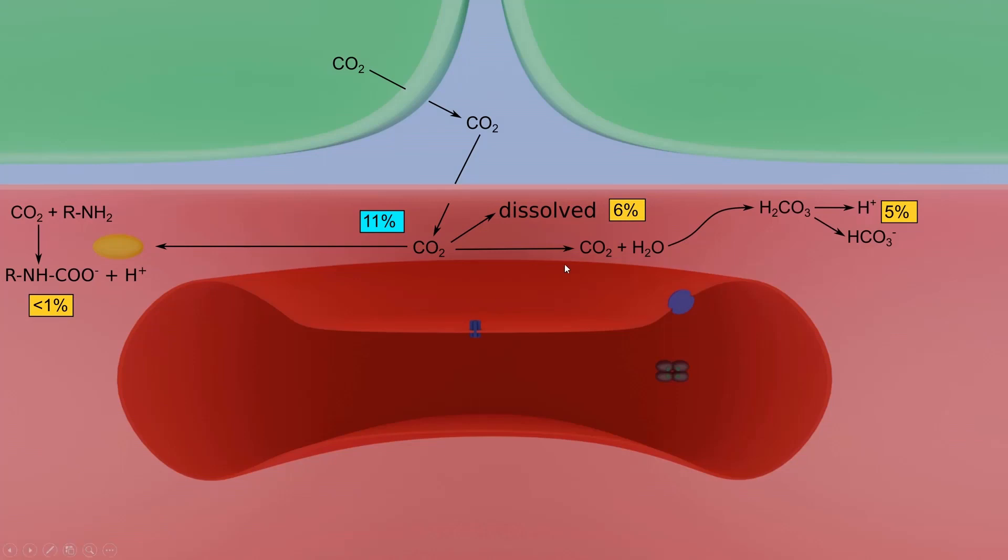Another portion of CO2 reacts with water to form carbonic acid, which later dissociates into hydrogen and bicarbonate ions. However, in plasma this reaction is very slow; only 5% of CO2 is transported in this form. The main part of carbon dioxide, 89%, enters erythrocytes via the AQP1 channel. Four percent of CO2 remains dissolved in the erythrocyte cytoplasm.